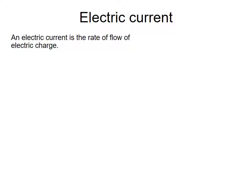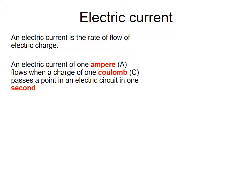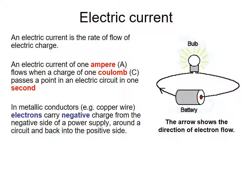Now looking at electric current, which we touched on briefly in the last unit on mains electricity: current is the rate of flow of an electric charge, and it's measured in amperes — where one ampere is one Coulomb passing a point in an electrical circuit in one second. In metal conductors like copper wires, electrons carry negative charge from the negative side of the power supply around the circuit and back into the positive side. The arrow shows the direction of the electrons, which is non-conventional current — we'll deal with conventional current more in electromagnetism.